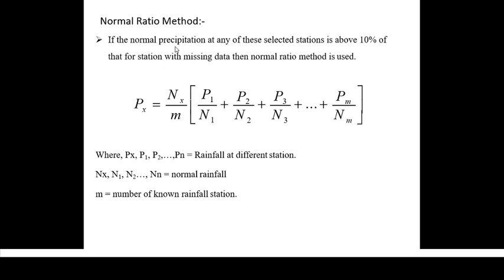The normal ratio method is similar to the average method. However, here we estimate the ratio of the rainfall with the normal rainfall, instead of estimating the rainfall directly. In that way, we can estimate the missing rainfall value. Here N1, N2, N3 and so on represent the normal rainfall — the 30-year average rainfall at each station. P1, P2, P3 and so on represent the precipitation in that particular year or month at the respective station. Px is the missing rainfall we want to calculate, Nx is the normal rainfall of the station with the missing value, and M is the number of stations. These are the two methods for calculating missing rainfall data.